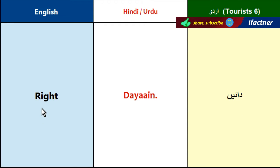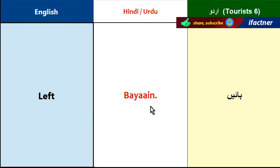Straight ahead: Seedha aagay. Seedha means straight, aagay means ahead. Right: Daayin. Left: Baayin.